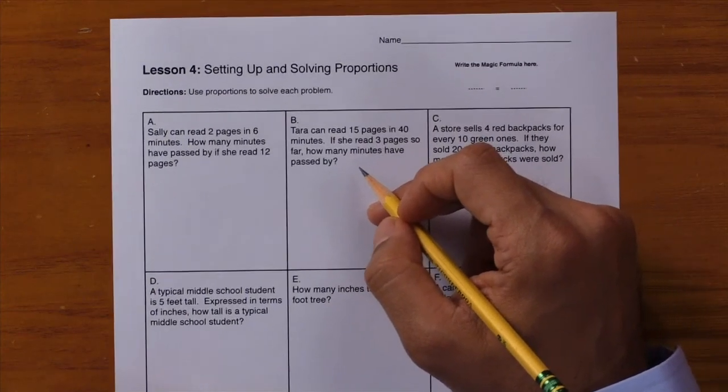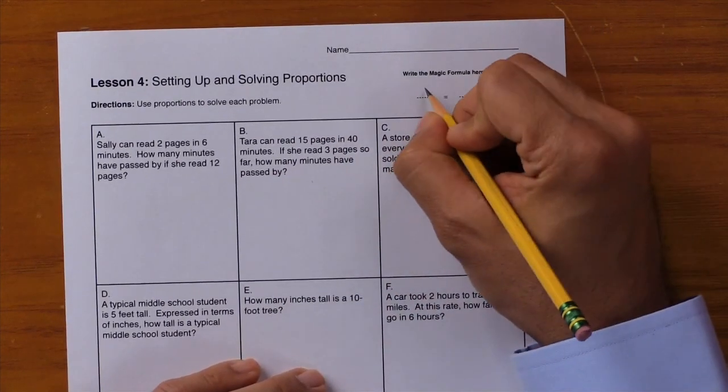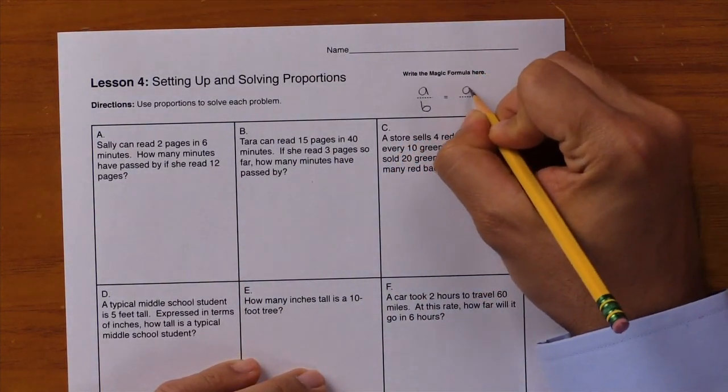In Lesson 4, students will continue setting up and solving proportions using the magic formula. Here's the magic formula again: A over B equals A over B.